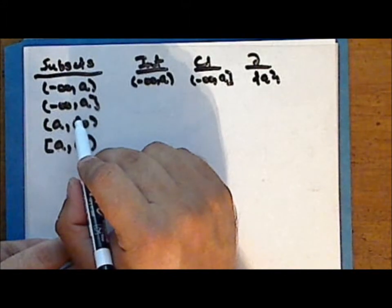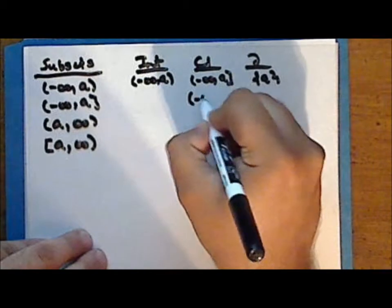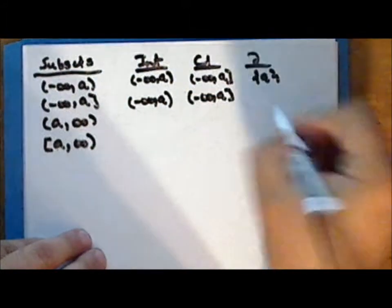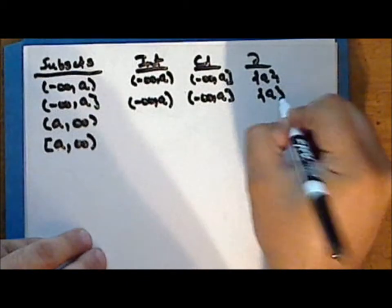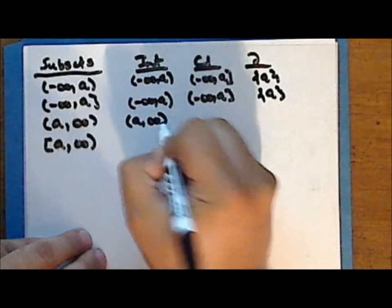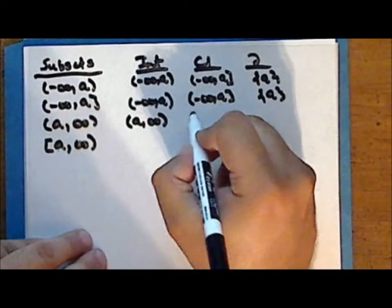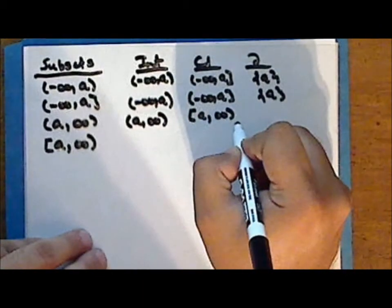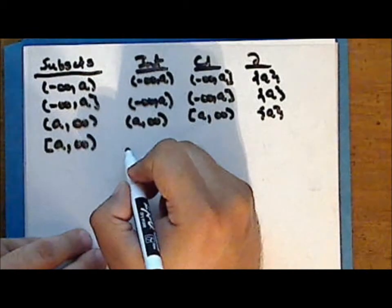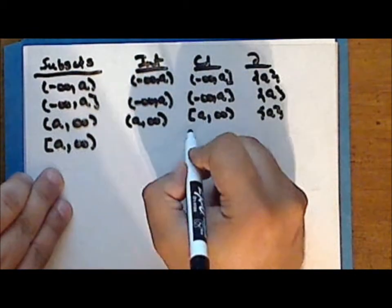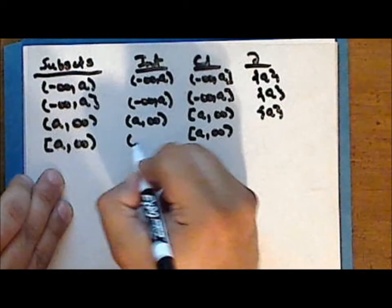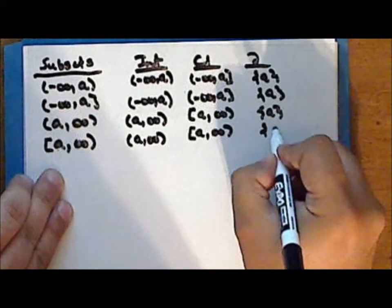The half-open ray from negative infinity to a inclusive of a is closed and so it is its own closure. The largest open set contained in it is the open ray from negative infinity to a, and the boundary is the singleton containing a. The open ray from a to positive infinity is open and so it is its own interior. The smallest closed set containing it is the half-open ray from a to positive infinity inclusive of a, and so the boundary is the singleton containing the element a. Finally, the half-open ray from a to positive infinity is closed and so it is its own closure. The largest open set contained in it is the open ray from a to positive infinity, and the boundary is the singleton containing the element a.